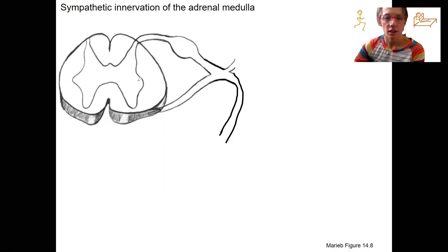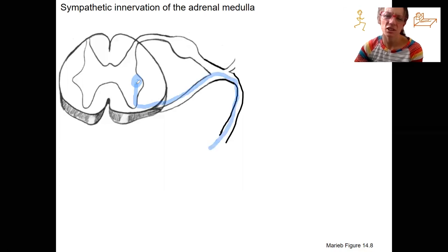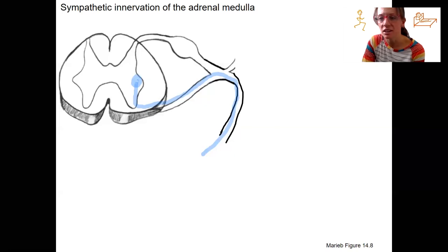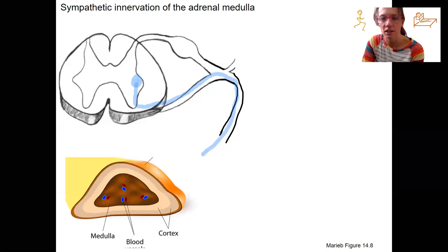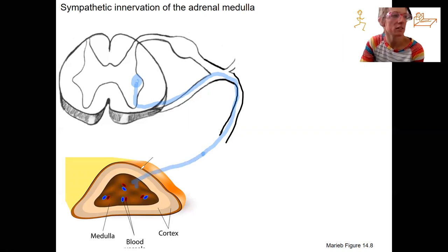We're going to start in the lateral horn again with a pre-ganglionic neuron, and that's going to travel out. Where do we think it's going to go? Little endocrine glands on top of the kidneys — that's where this is. We're going to have this cell synapse on cells that are within the adrenal medulla.